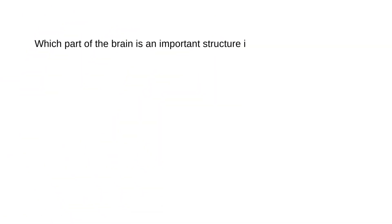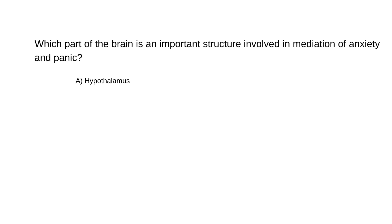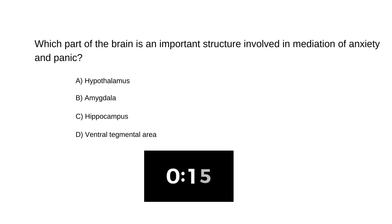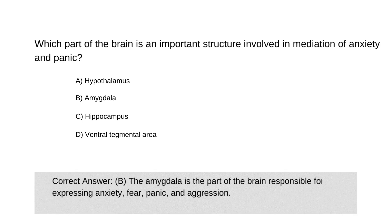Which part of the brain is an important structure involved in mediation of anxiety and panic? A) Hypothalamus, B) Amygdala, C) Hippocampus, or D) Ventral tegmental area. The correct answer is B. The amygdala is the part of the brain responsible for expressing anxiety, fear, panic, and aggression.